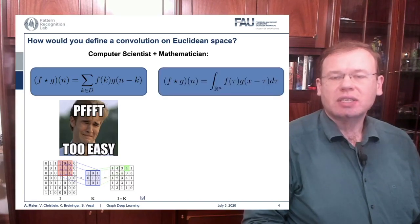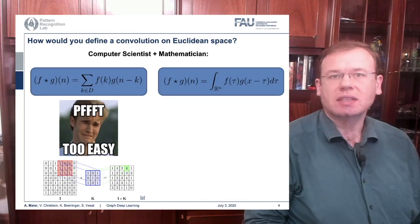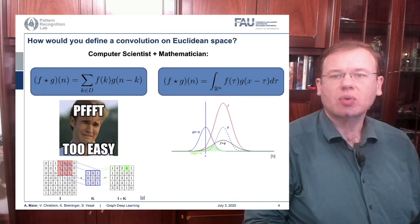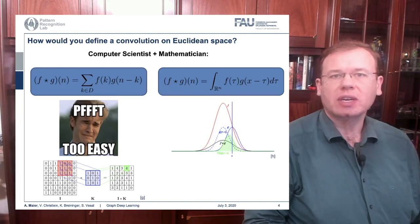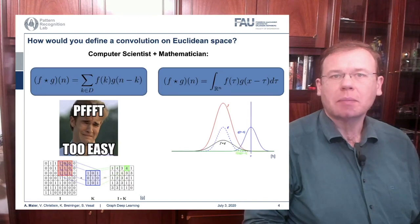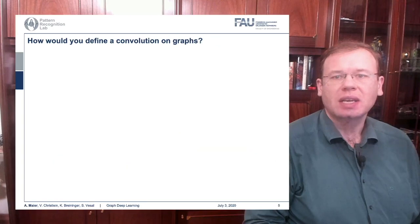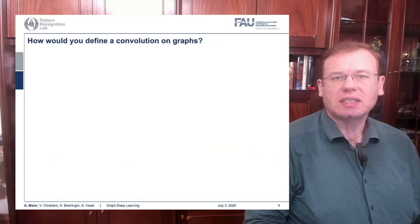In the continuous form, it actually takes the following form — it's essentially an integral computed over the entire space. For example, if you want to convolve two Gaussian curves, you essentially move them over each other, multiply at each point, and sum them up. Of course, a convolution of two Gaussians is a Gaussian again. So this is also easy.